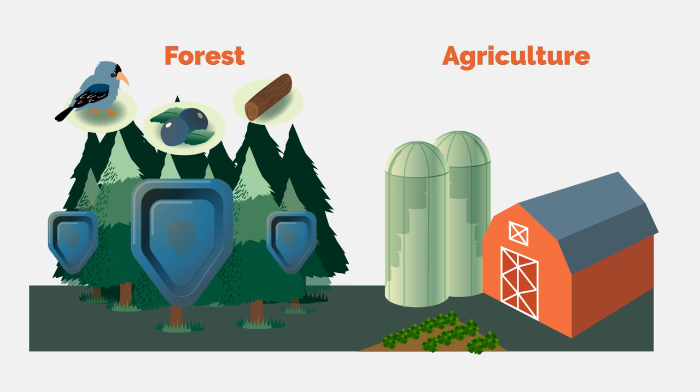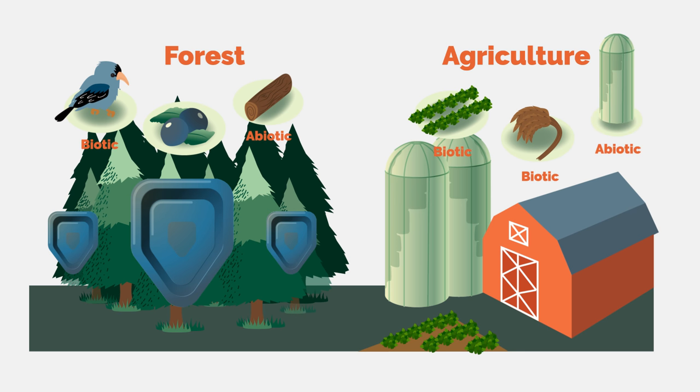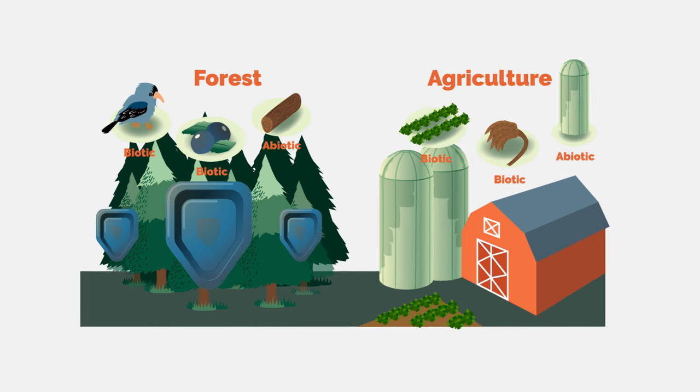In contrast, agriculture's primary goal is to grow crops that are harvested at least annually. While both forestry and agriculture are frequently aimed at the harvest of goods, these two management styles take vastly different approaches, since the ecosystems being managed have vastly different biotic and abiotic components.